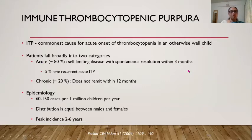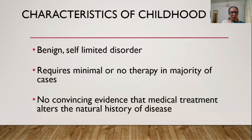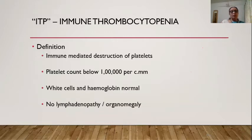Five percent may have recurrent acute ITP, and only 15–20% of children who do not remit within 12 months are termed chronic. Epidemiologically, 60–150 cases per million children per year are known, with equal sex distribution. Peak incidence is 2–6 years, though we observe it more commonly at 4–10 years. It is a benign self-limited disorder requiring minimal or no therapy in most cases.